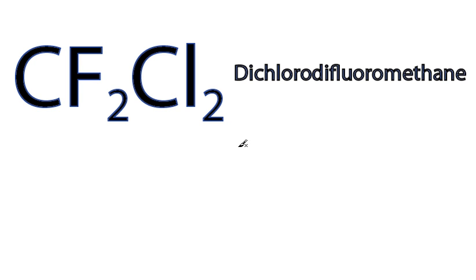Hi, this is Dr. B. We're going to do the Lewis structure for CF2Cl2, dichlorodifluoromethane. Let's start out by looking on the periodic table. Carbon's in group 4, so it has 4 valence electrons.